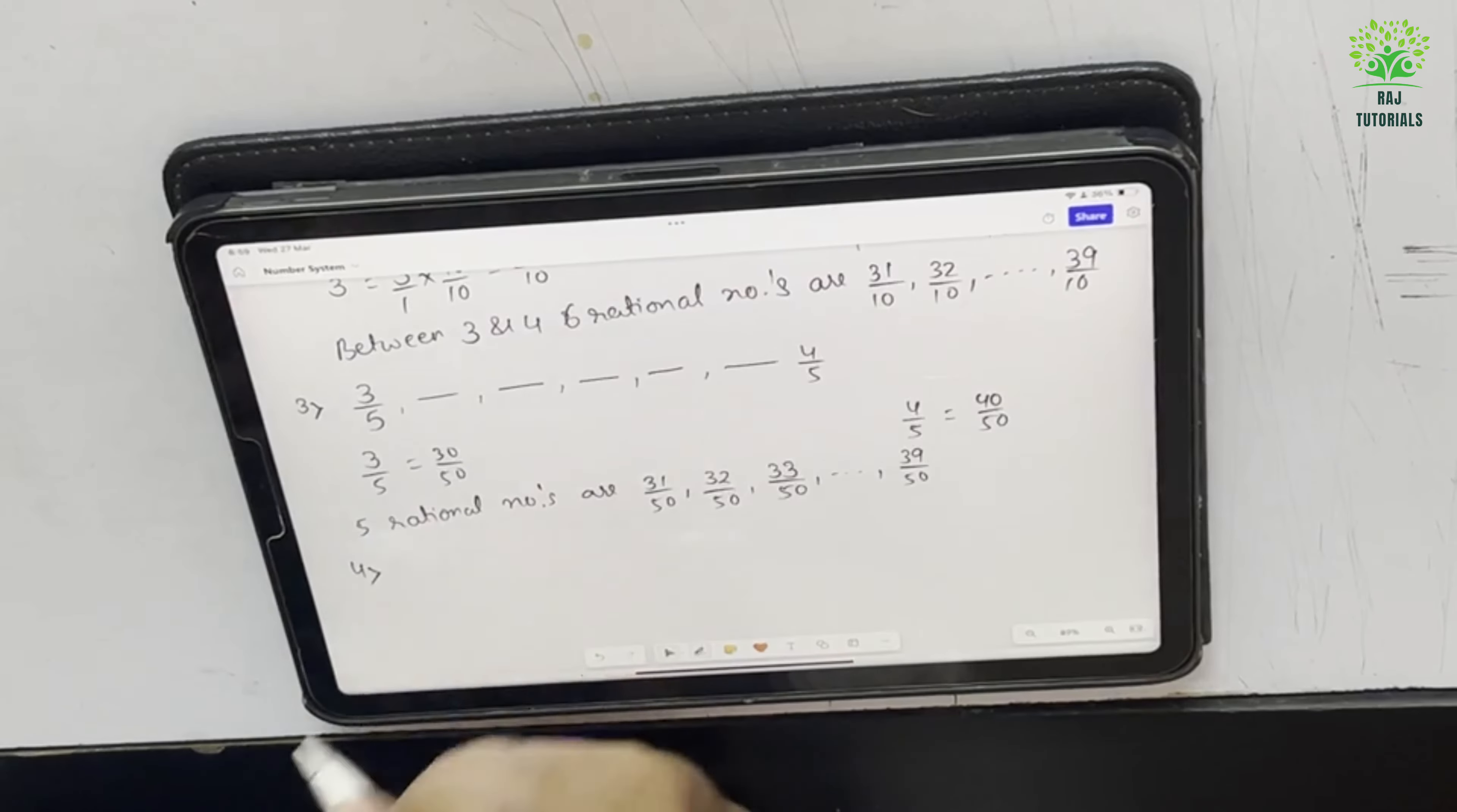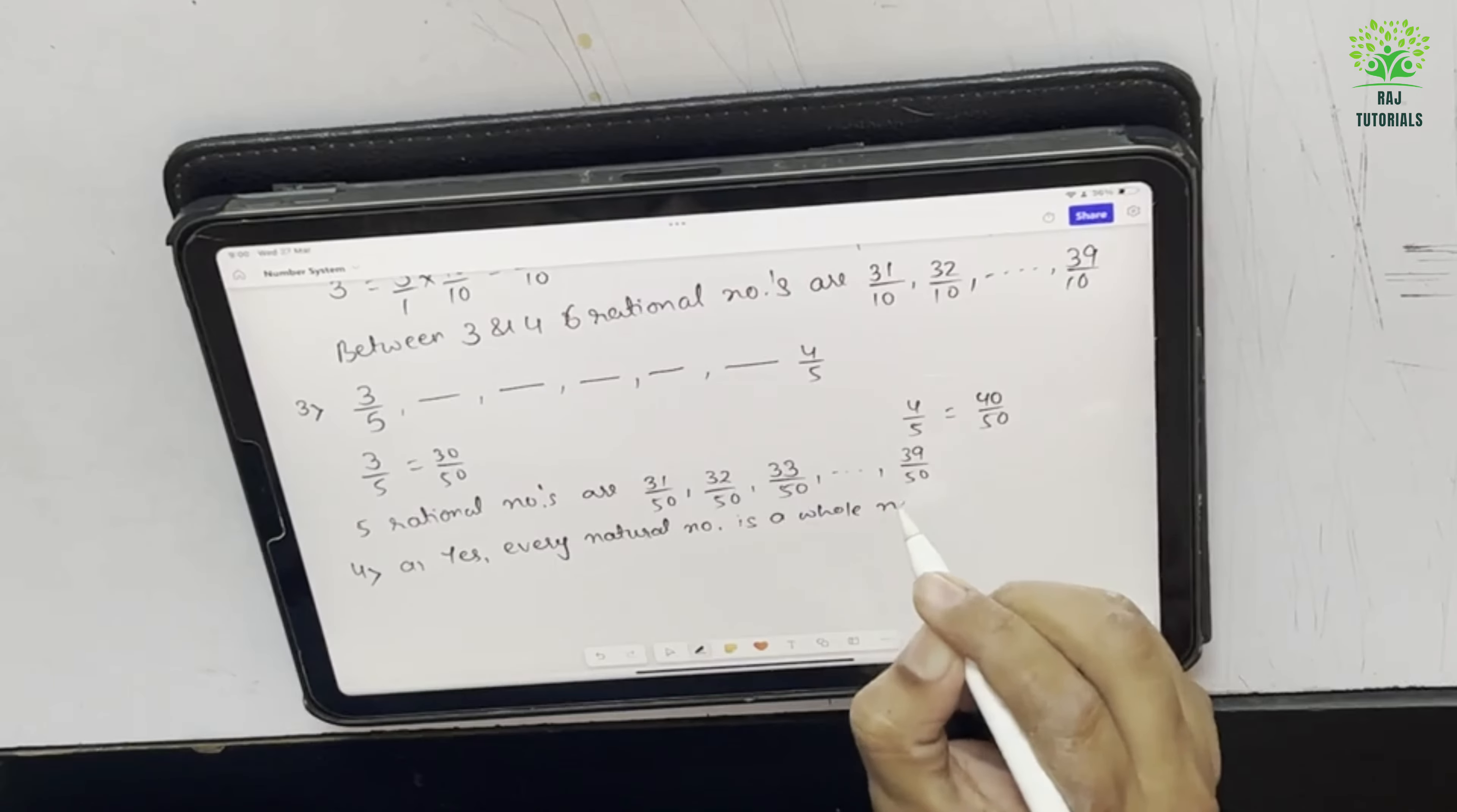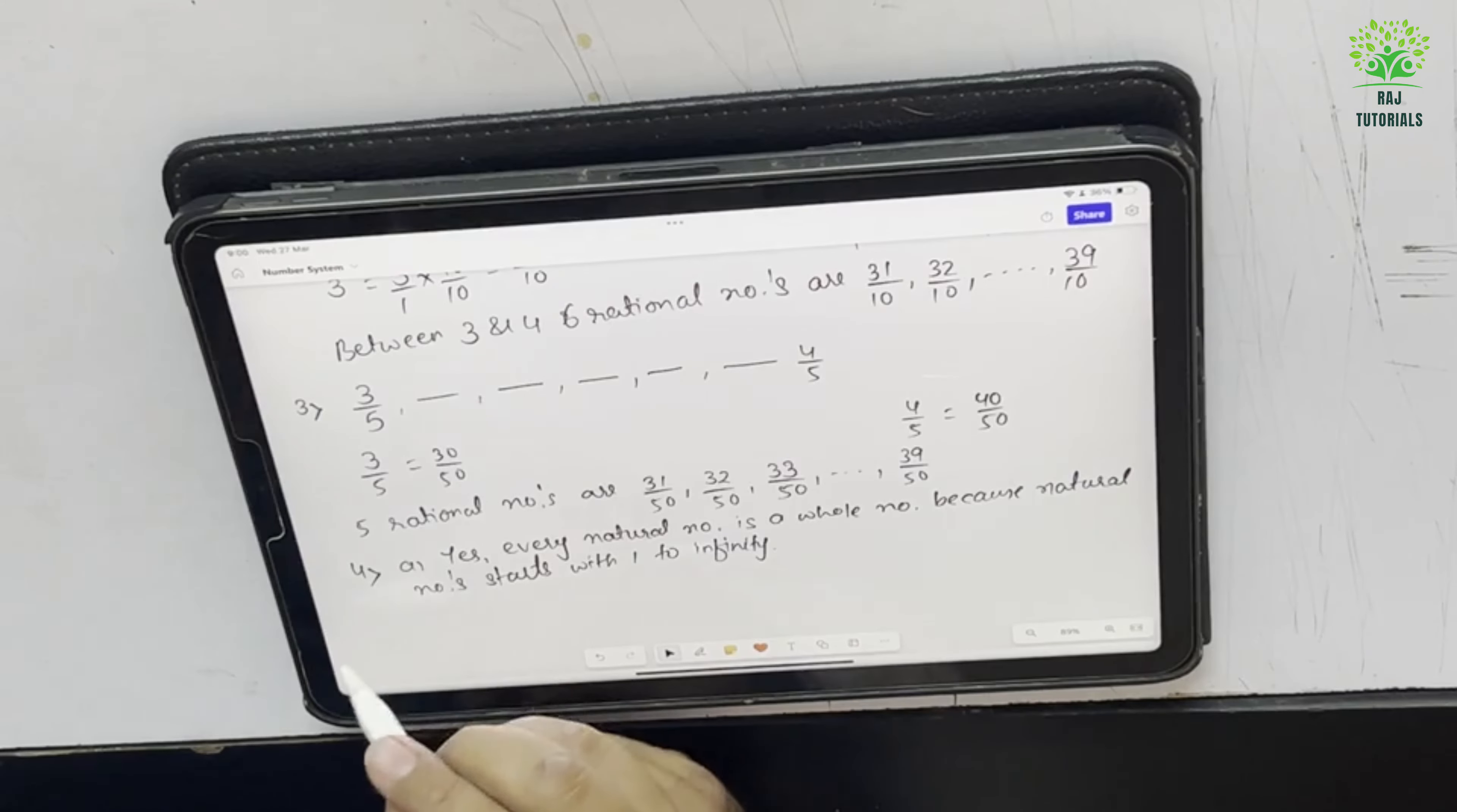Now the fourth question is state whether the following statements are true or false, give reason for each. The first one is every natural number is a whole number. Yes, every natural number is a whole number because natural number starts with 1 to infinity and whole numbers are 0, 1, 2, 3 till infinity. So from 1, all the numbers are coming in that range.